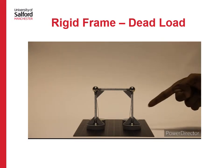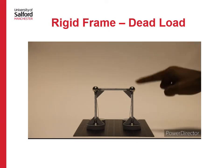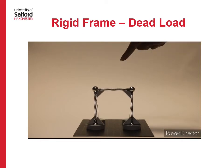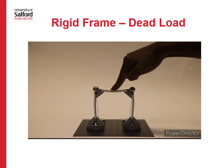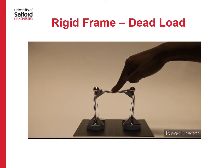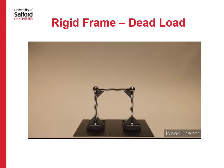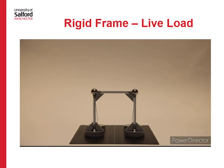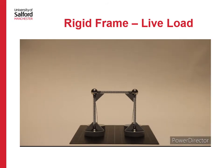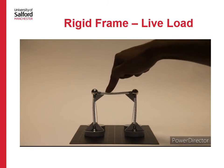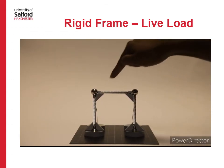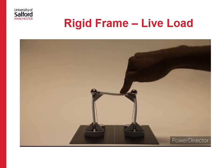Let us now study the behavior of a rigid moment-resisting frame. The joints are rigid. When a dead load is applied, the moment in the beam is transferred to the columns due to the rigid joints. When a live load is applied as a moving load, you can see again that the moment in the beam is transferred to the columns due to the rigid joints.